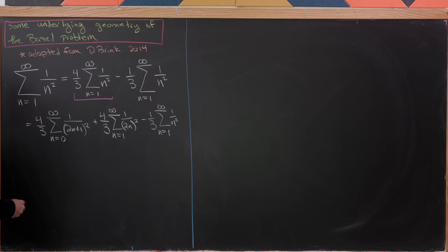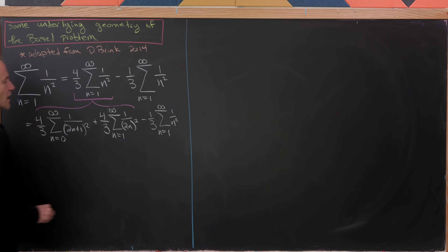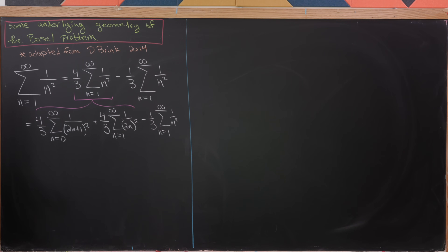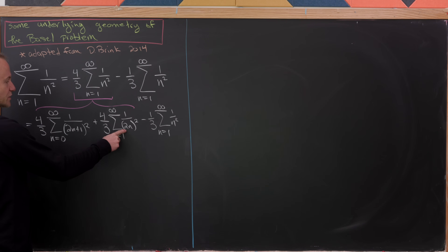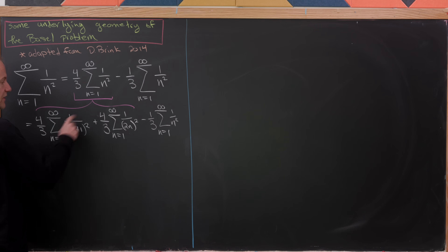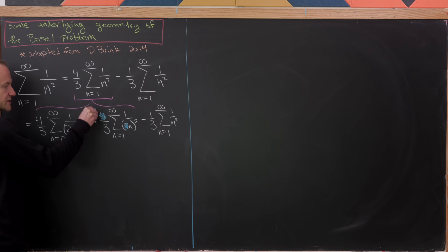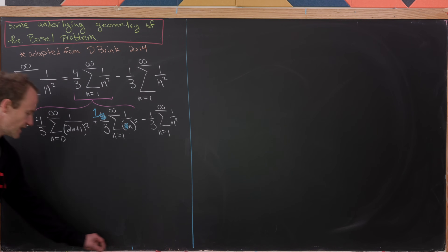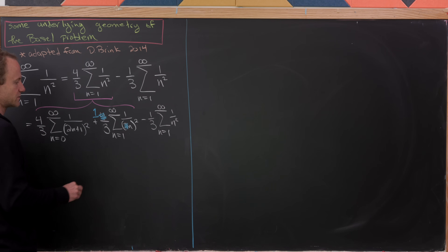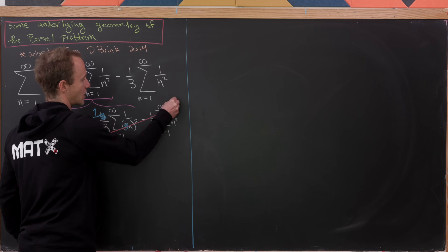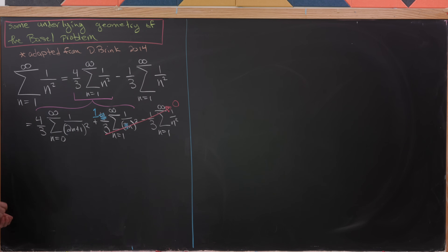Now observe that in the even-parts term, squaring the 2 picks up a factor of four that cancels the four in the numerator. So after that cancellation, we're left with one-third of the sum of reciprocal of squares minus one-third of the sum of reciprocal of squares — those cancel. We're left with just four-thirds times the sum of the reciprocal of the odd squares.